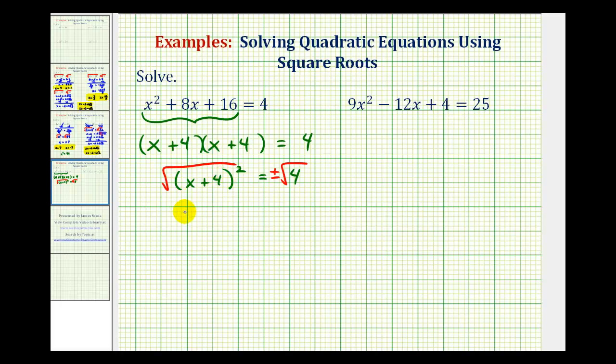So on the left, this simplifies to just one factor of x plus 4. And then the square root of 4 is equal to 2. So this simplifies to plus or minus 2.